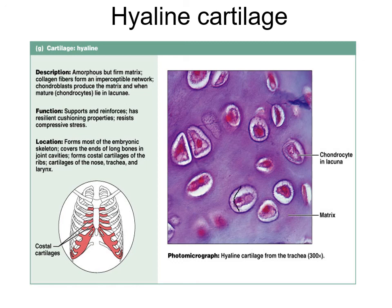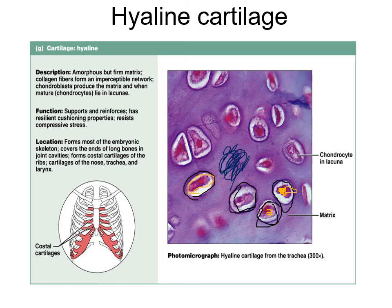In hyaline cartilage, the circular areas are called lacunae. Within the lacunae is the actual chondrocyte. Chondrocytes lay down the material in between - all that material is chondroitin sulfate, which becomes semi-solid. So you have chondrocytes within lacunae, laying down chondroitin sulfate.